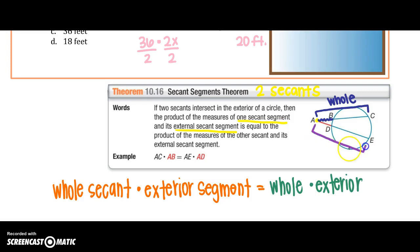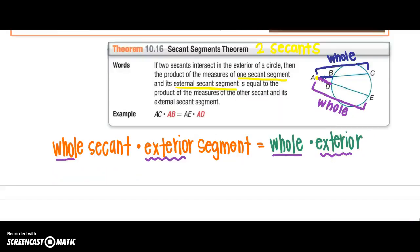That is going to equal the whole, the other whole, AE, times the exterior part, AD. Alright, so our whole times the exterior equals the whole times the exterior. So, let's try it out.